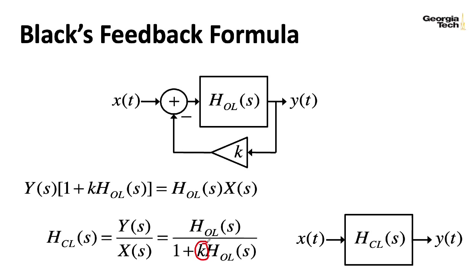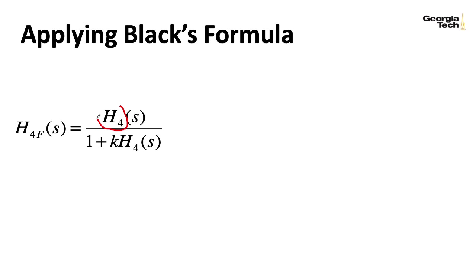So for my open loop transfer function, let's let h sub 4 represent that cascade of four one-pole filters. And we'll let h sub 4, f represent the frequency response we get from this negative feedback. Obviously, if I were to plug in k equals zero here, this term would go away, and I get my original open loop transfer function, which makes sense.